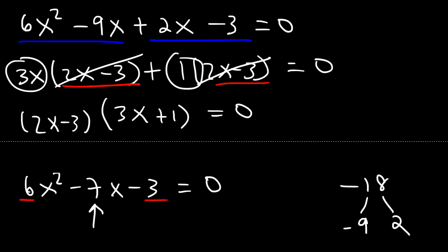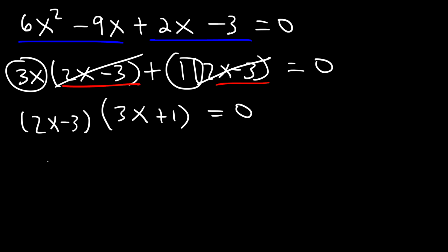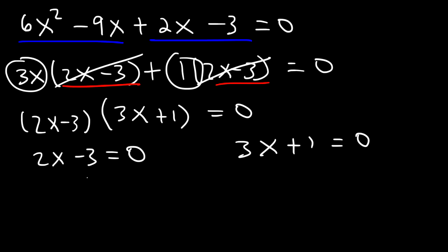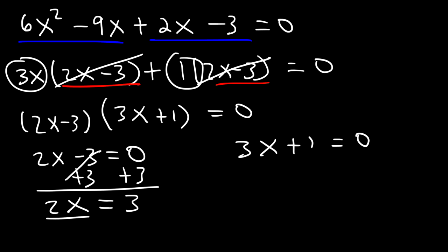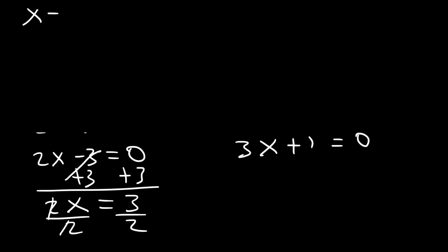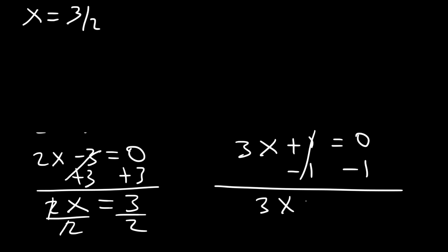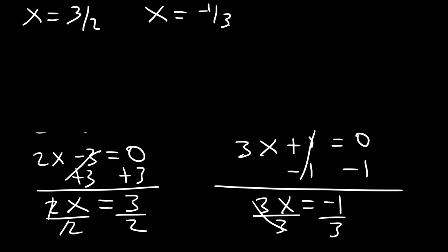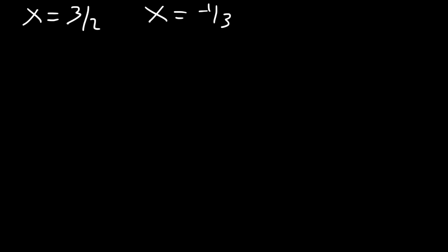Now factor out the common binomial (2x minus 3), leaving (2x minus 3)(3x plus 1) equals zero. Setting each factor equal to zero: from 2x minus 3 equals zero, x equals 3/2; and from 3x plus 1 equals zero, x equals negative 1/3. So the horizontal tangent lines occur at x equals 3/2 and x equals negative 1/3.